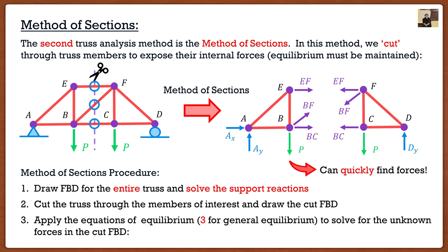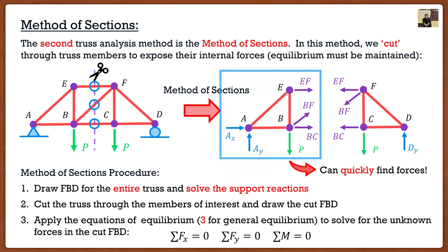From there, I have a free body diagram, I know the support conditions, and I have a number of unknowns. Since this truss must stay in equilibrium, I have three equations for general equilibrium. In the method of joints everything intersected at a joint, so we used particle equilibrium — two equations. Now not everything is at the same joint, so we use general equilibrium: summation of forces in x equals zero, summation of forces in y equals zero, and summation of moments at any point equals zero. Looking at the left side of the cut, AX and AY are known, load P is given, and we have three truss forces — EF, BF, and BC. Three equations, three unknowns — we can quickly solve for internal forces in the middle of the truss.